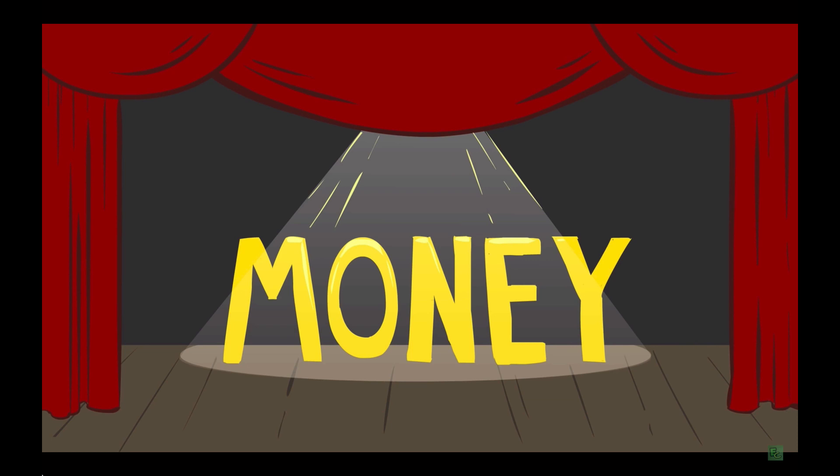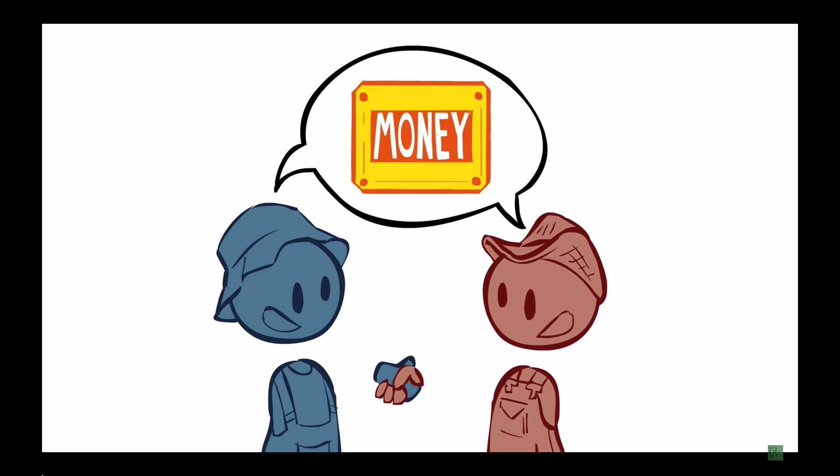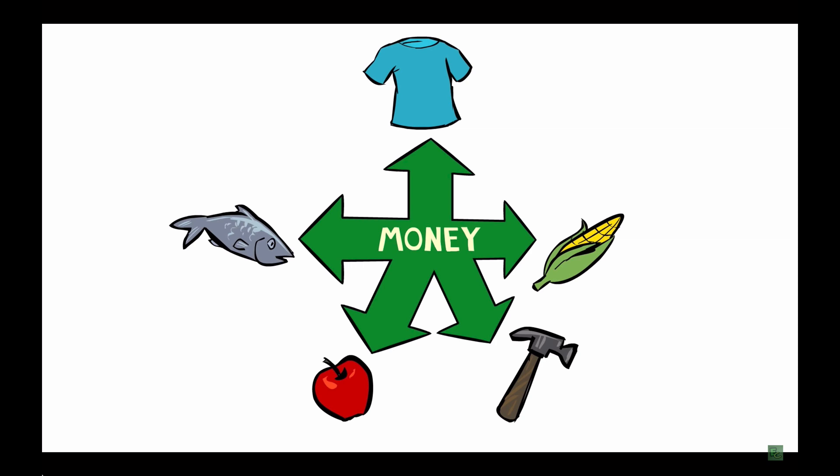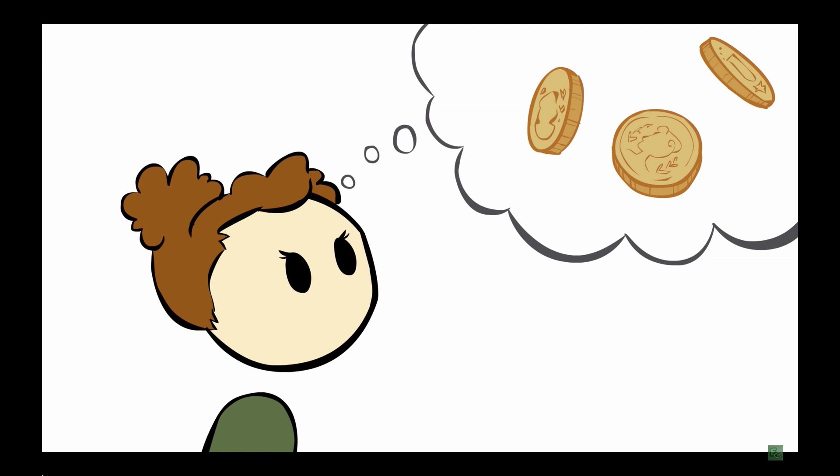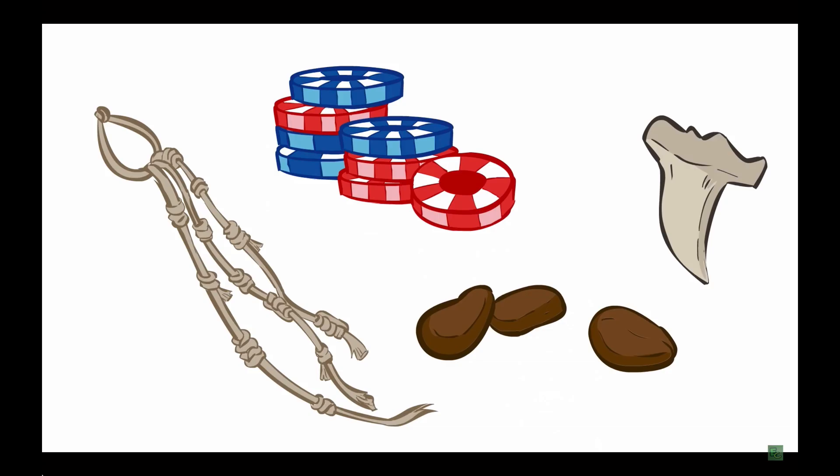Enter money. All money is, is a third good that doesn't spoil and that we all agree has value, thus becoming a unit of exchange, an intermediary good by which all other goods can be traded. And while we often think of coins made of precious metals for this purpose, the truth is, so long as it's durable enough and hard enough to procure, anything can serve as money.